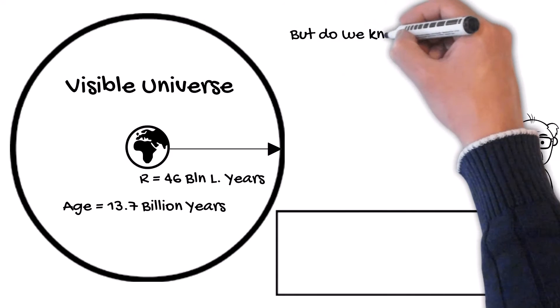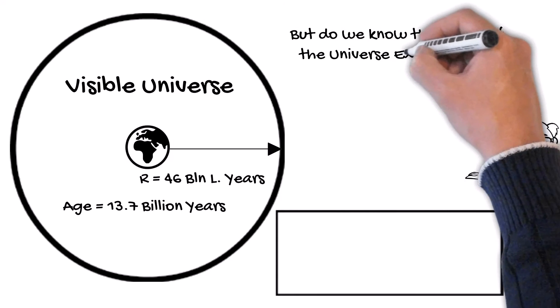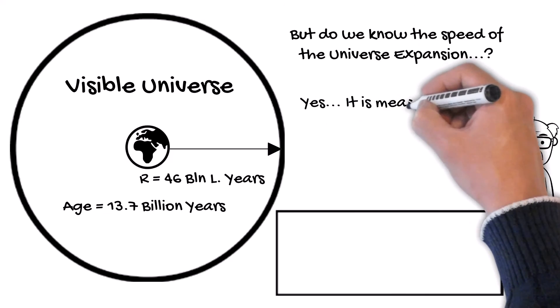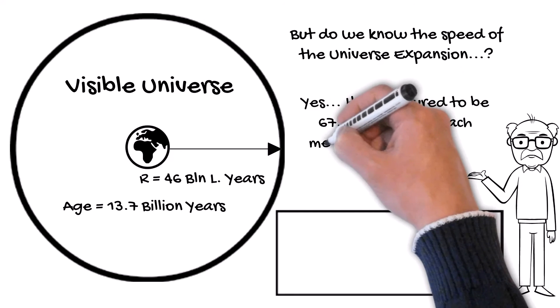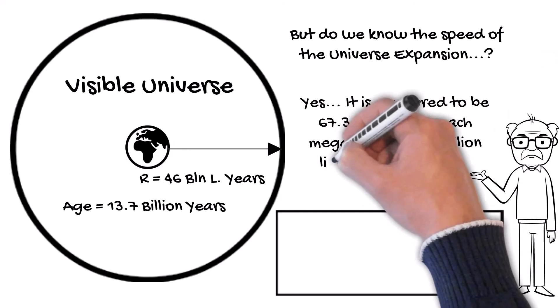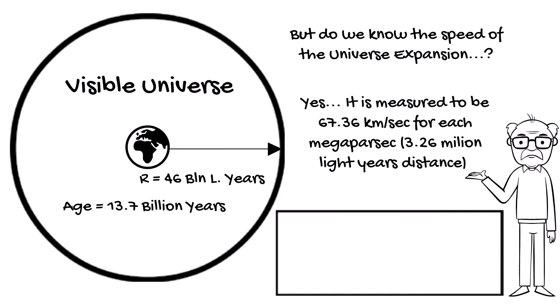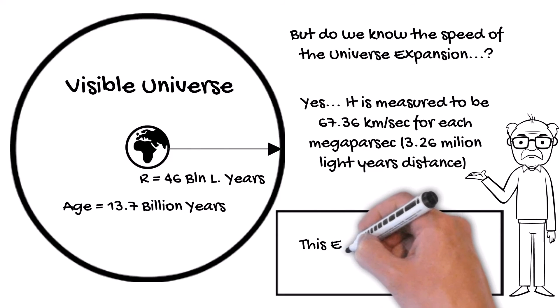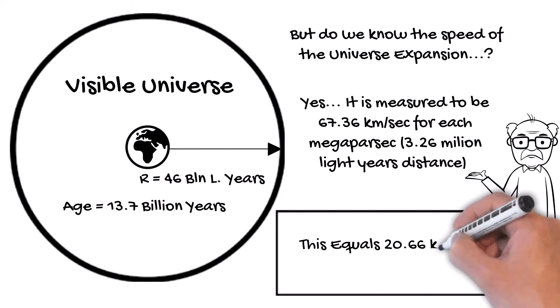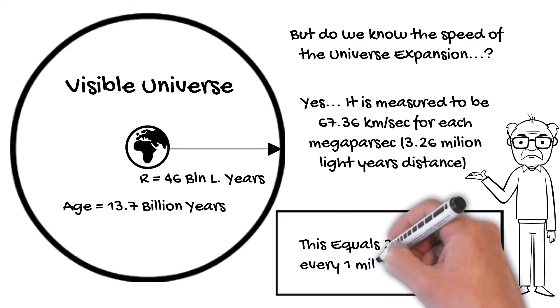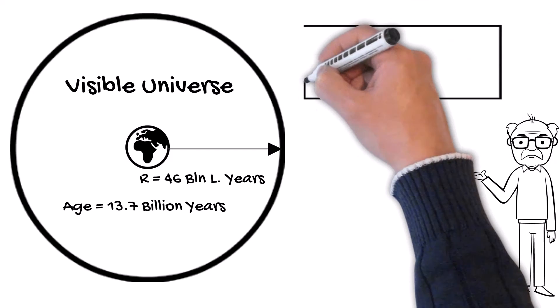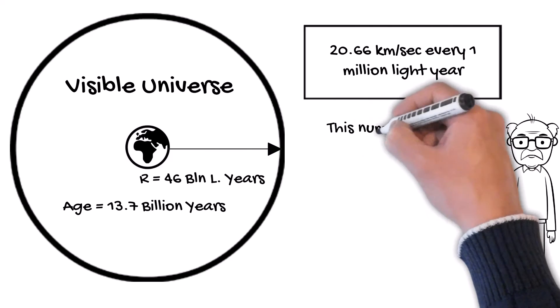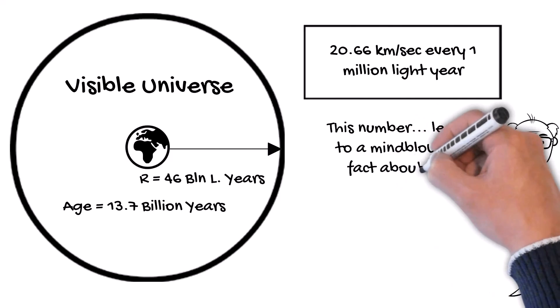But do we know the speed of the universe expansion? Yes, it is measured to be 67.36 kilometers per second for each mega-parsec, 3.26 million light years distance. This equals 20.66 kilometers per second every 1 million light years. This number leads to a mind-blowing fact about our universe.